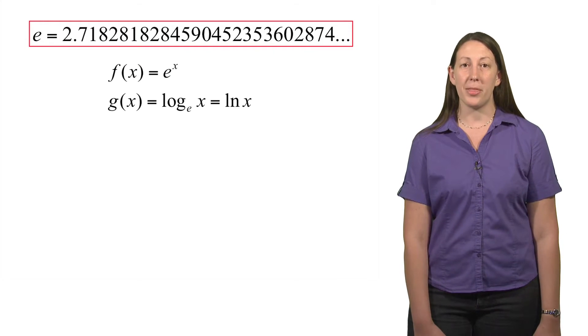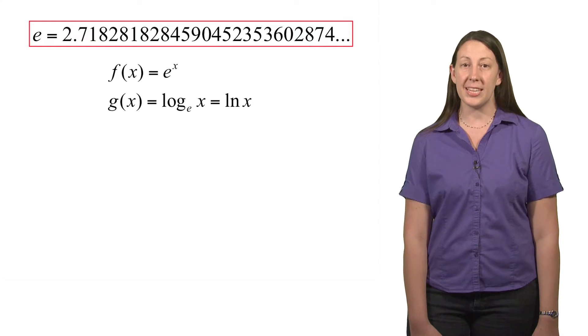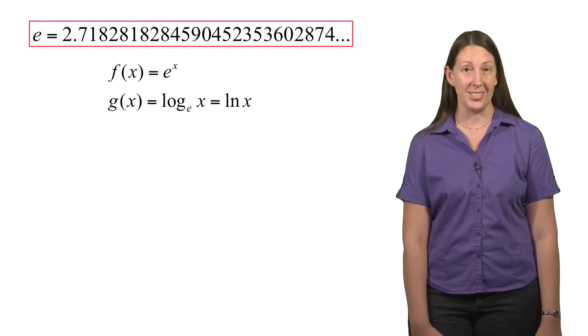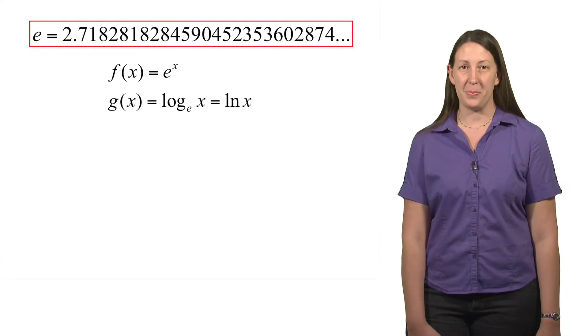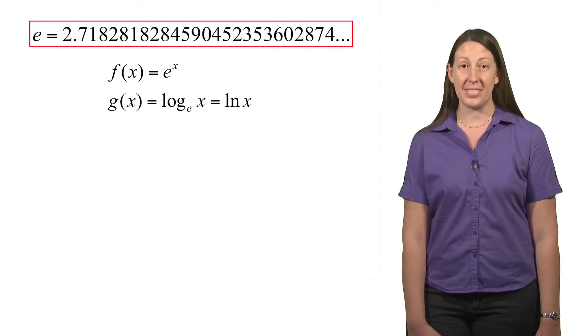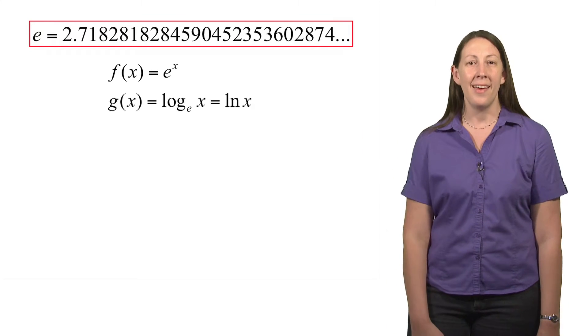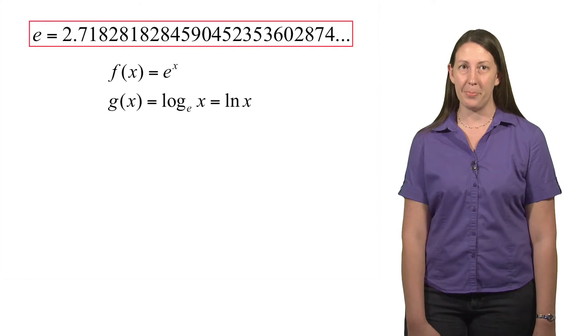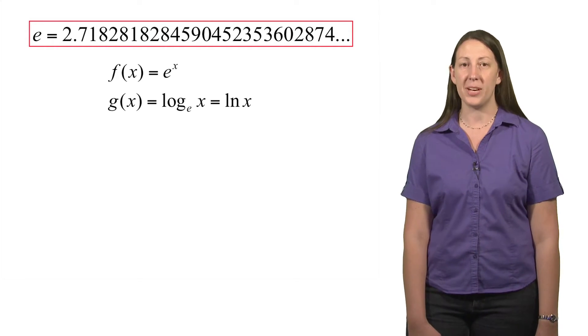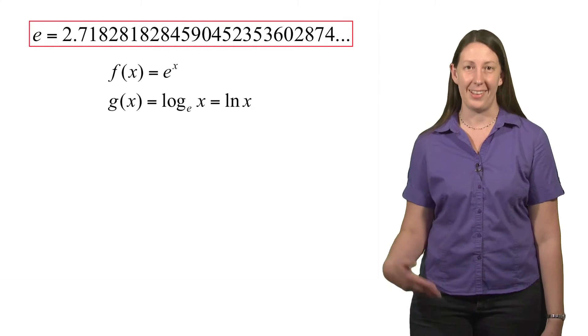Let's move on and talk about the function that results from Euler's constant, or the exponential function. Using that notation that Euler developed for functions, f(x) equals e to the x is called the exponential function. This means we take that Euler constant number, 2.71, etc., and raise it to any number x as the power. For example, f(1) would just be e raised to the 1 power, which is just e itself, or that 2.71, etc.